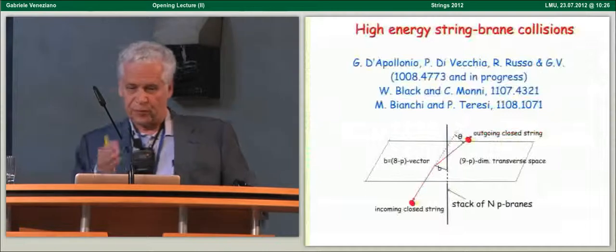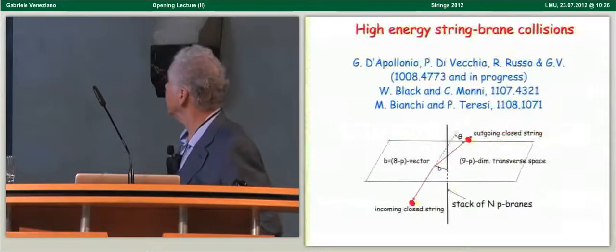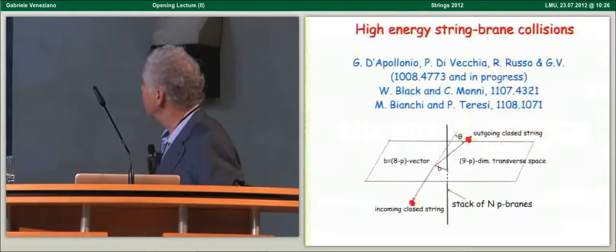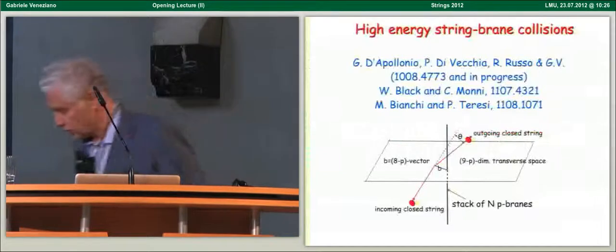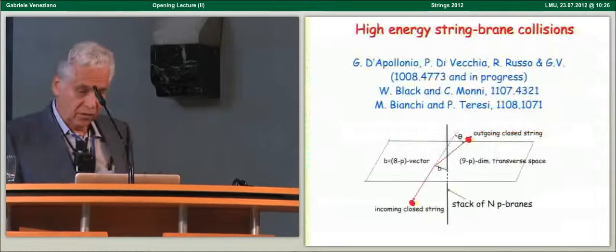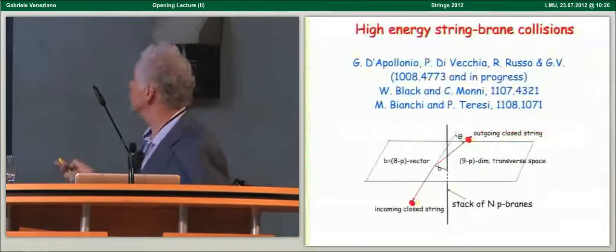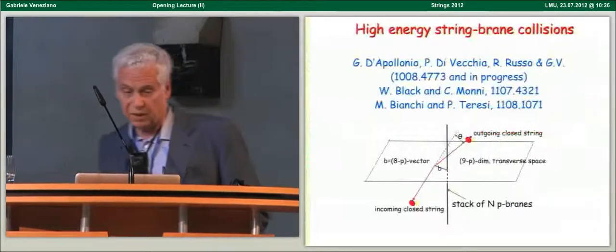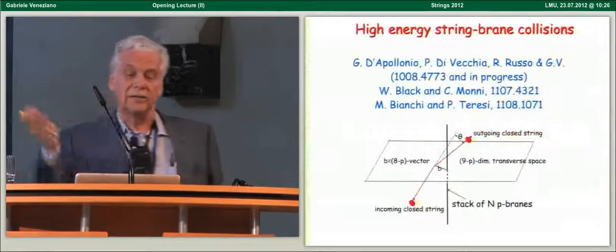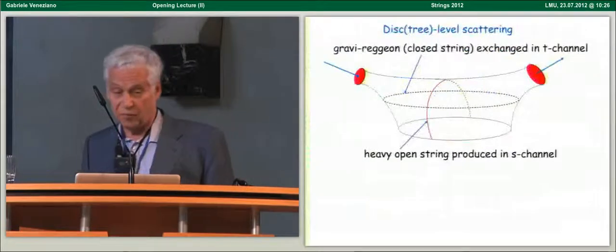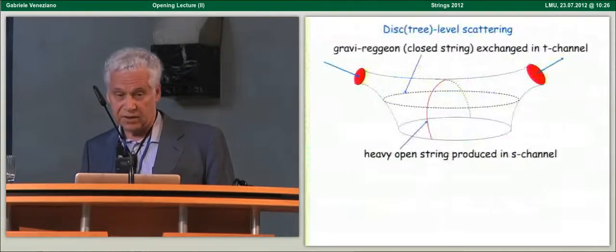So, basically, this is illustrated here. Let's represent a stack of np branes by this line, and then on a plane transverse to the stack, we have an incoming closed string, which impinges on the branes at some impact parameter b, and then, well, something happens. It's either deflected, or it can be absorbed by the brane system.